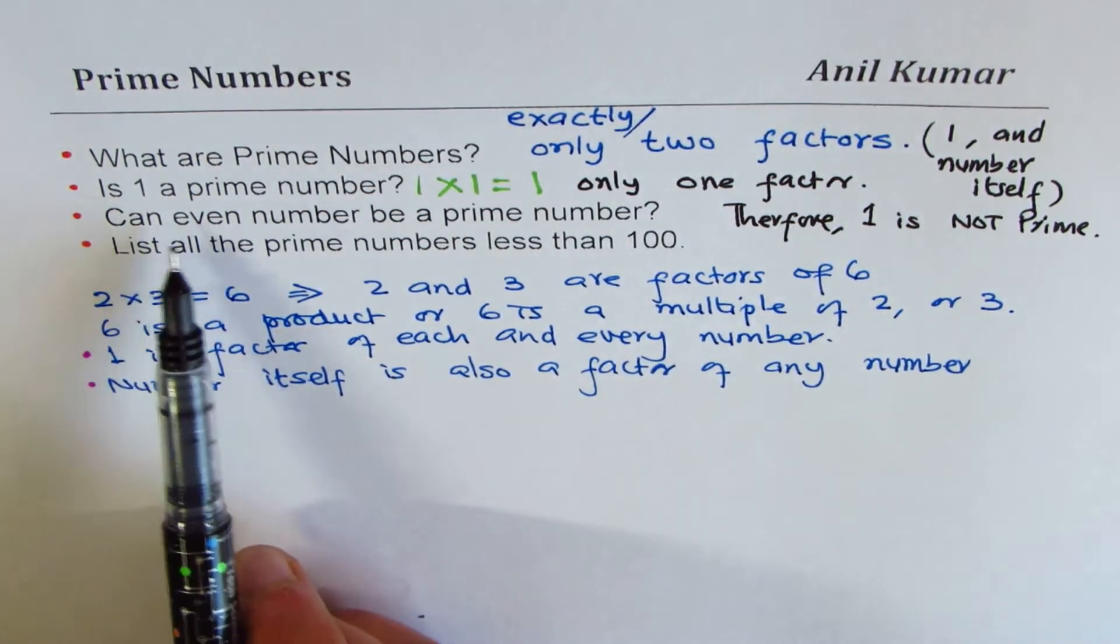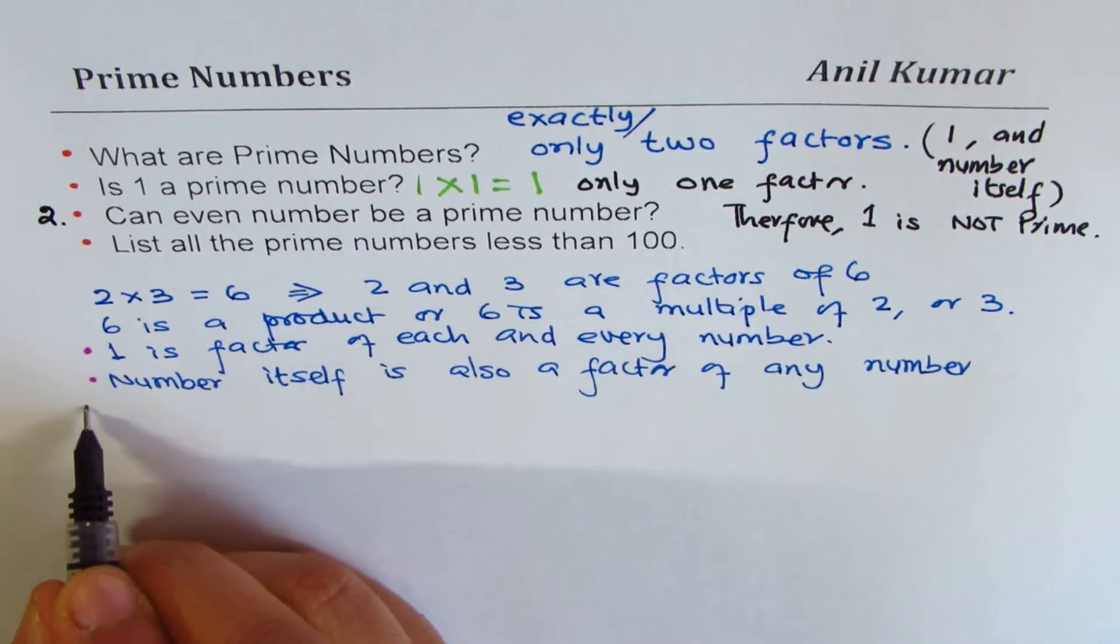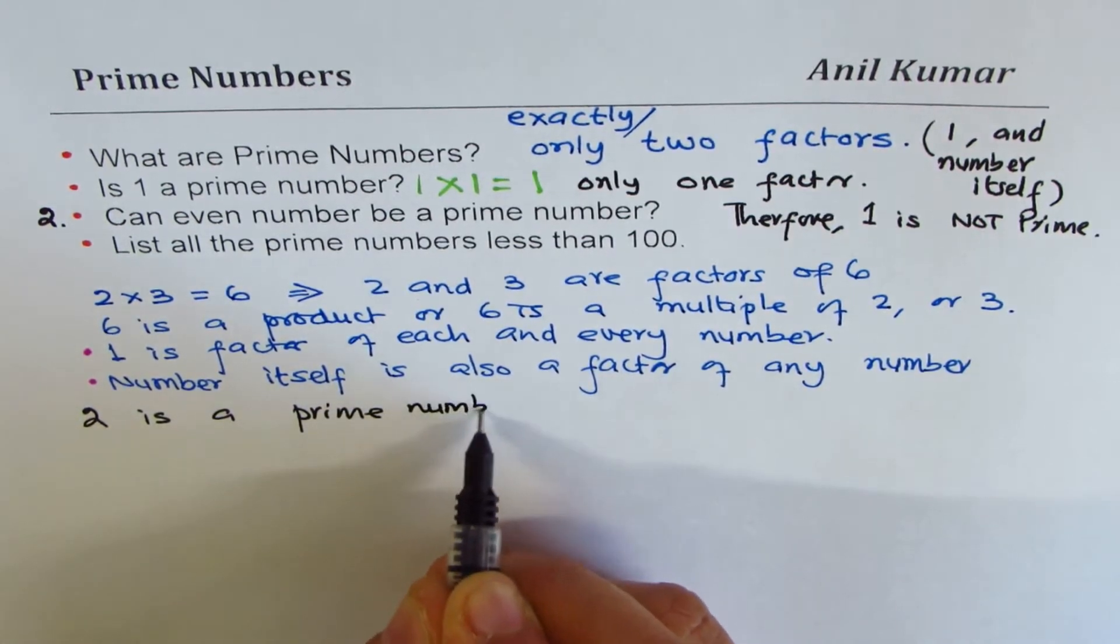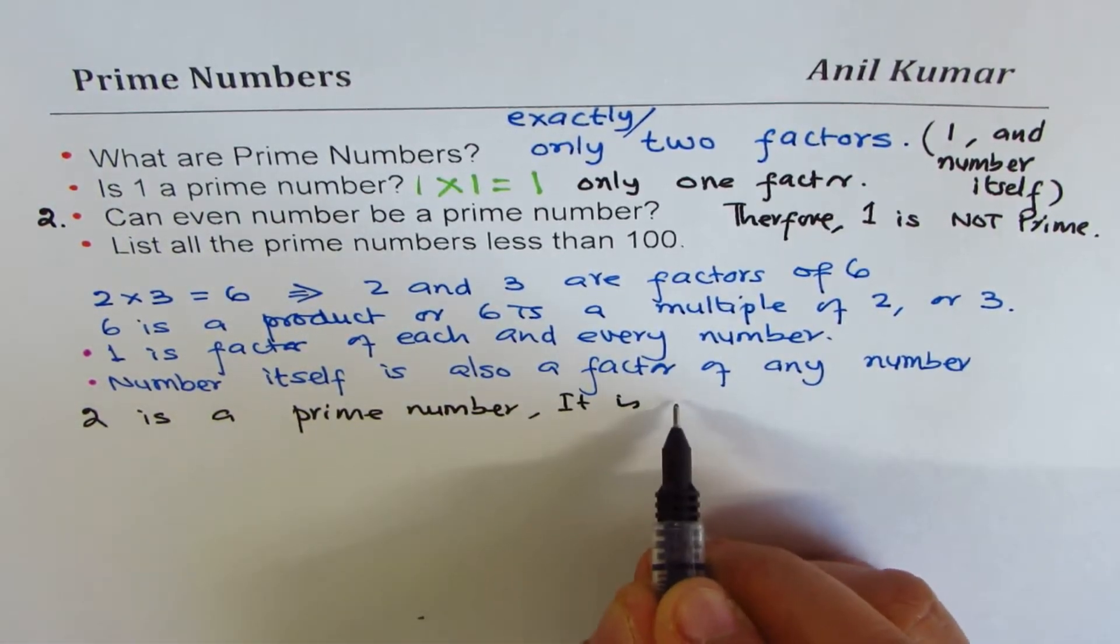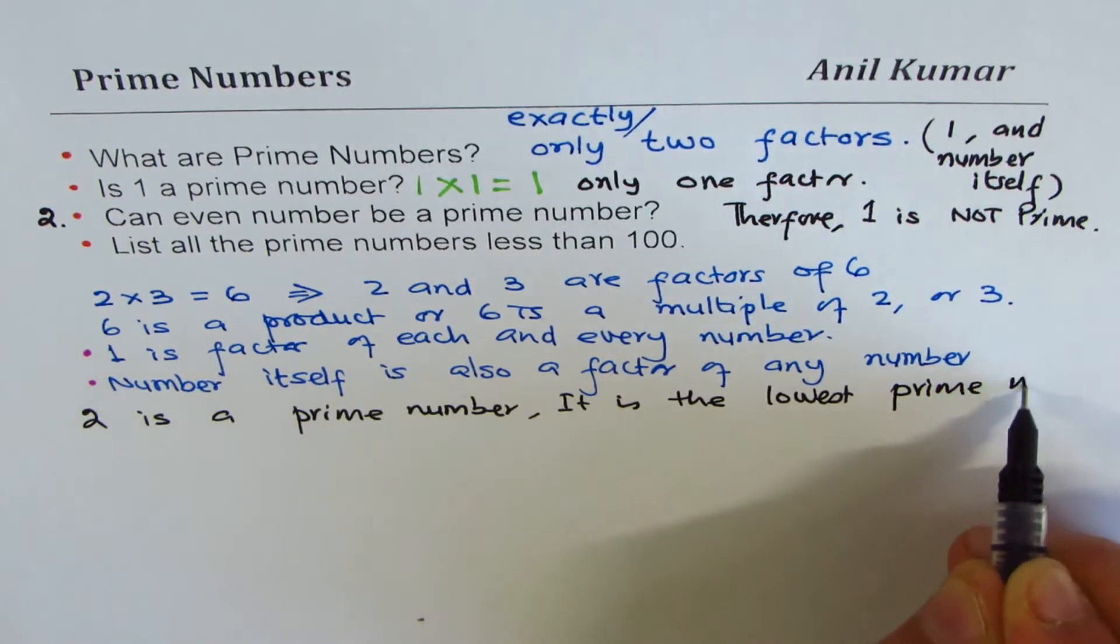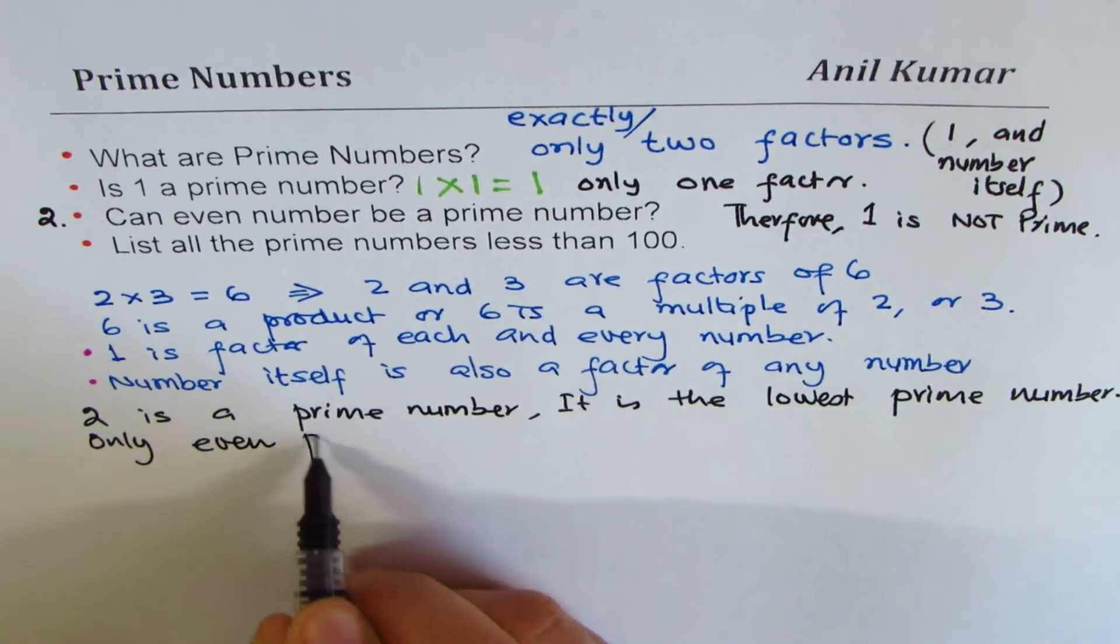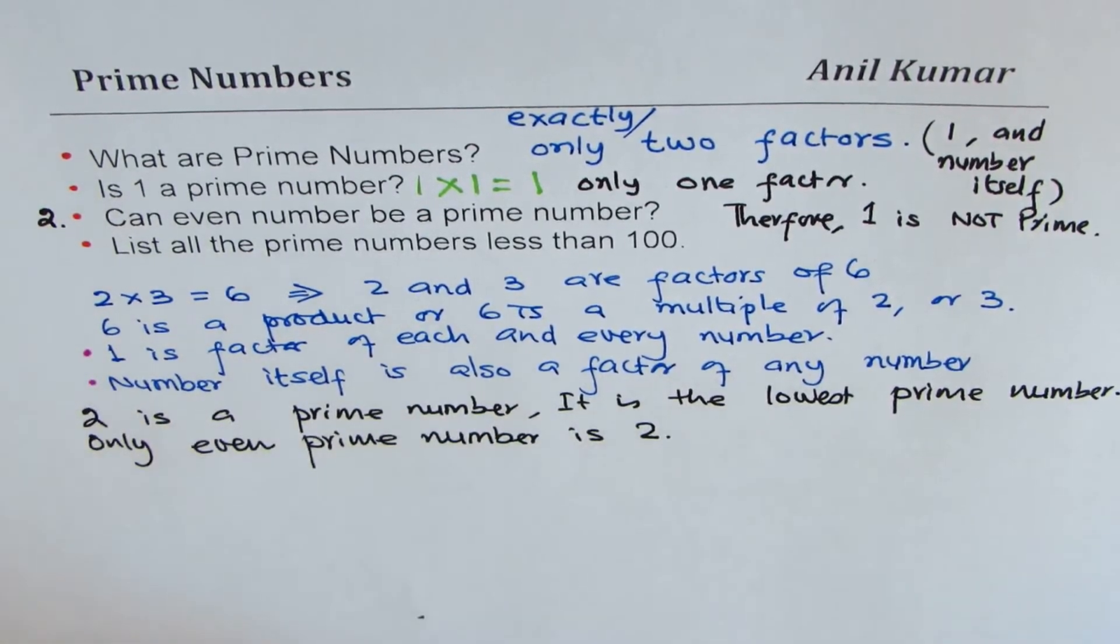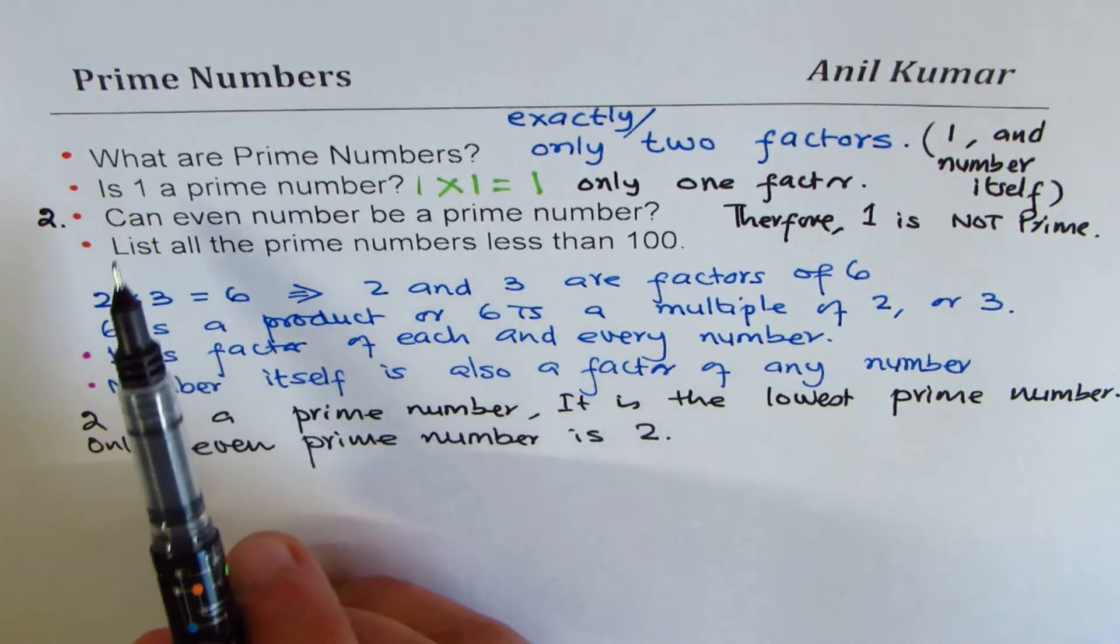Now the third question here is, can even numbers be prime numbers? Yes, number two. So we know two is a prime number. Two is even, so it is the lowest prime number. And only even prime number is two. All other even numbers have additional factor of two. So that is how we can answer these three.